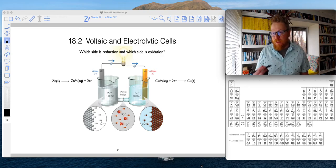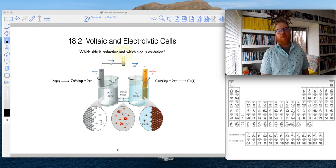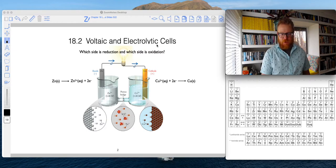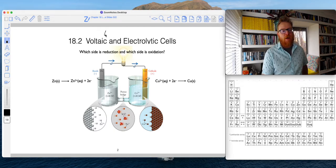We're going to take what we know about reduction and oxidation and apply it to these things called voltaic and electrolytic cells. First, let me just describe what this is. Both voltaic and electrolytic cells are a class of what we call electrochemical cells.